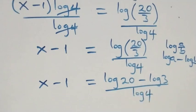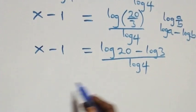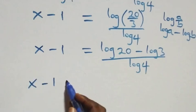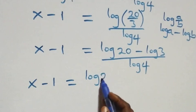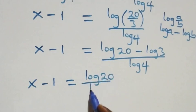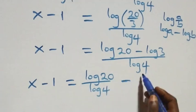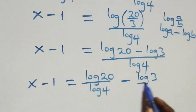Here we separate this into two fractions and we have x minus 1 equals log 20 over log 4, minus log 3 over log 4.